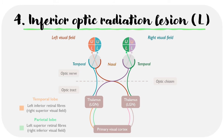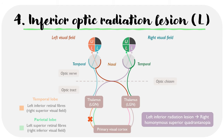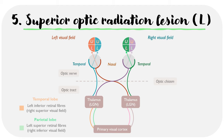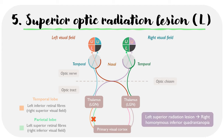Let's take a look at an example where we have a lesion in the left inferior retinal fibers. Tracing the orange line, it meets both the blue and purple lines, so the right visual fields in both eyes are affected. Since this is an inferior retinal fiber, we lose the upper right quadrants of each eye — an inferior optic radiation lesion leads to a right-sided superior quadrantanopia. If we have a lesion in the left superior retinal fibers, they connect to the blue and purple lines contributing to the right visual field, and since it's a superior retinal fiber, we lose the lower right quadrants — a superior optic radiation lesion on the left leads to a right-sided inferior quadrantanopia.